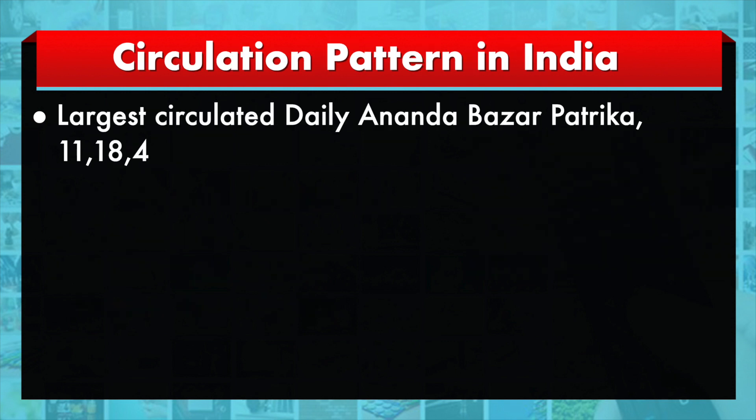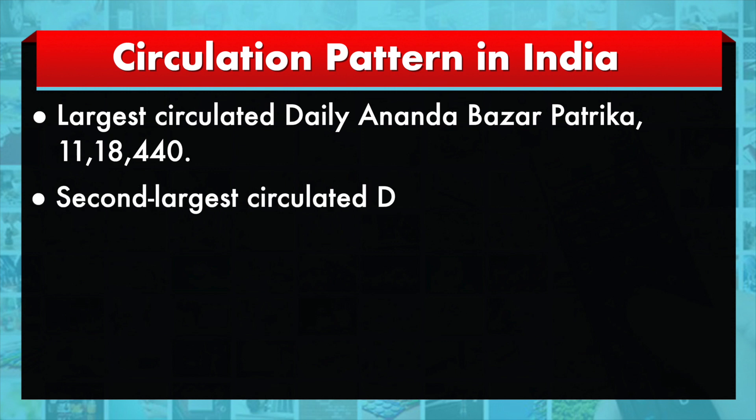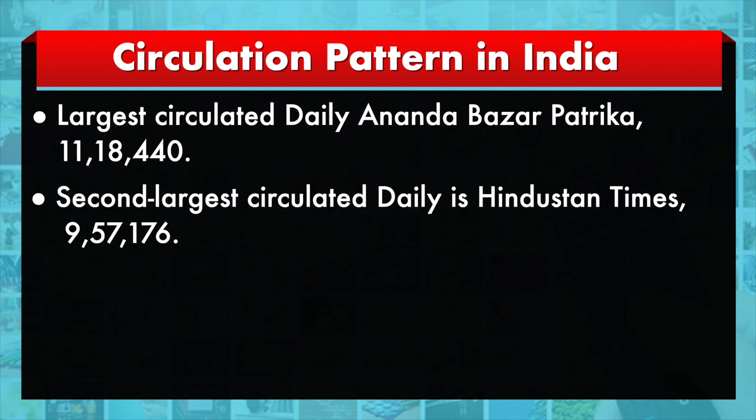The largest circulated daily is Ananda Bazar Patrika, which is also one of the oldest newspapers in India, having a circulation of about 11,18,440. The second largest circulated daily is the Hindustan Times, with 9,50,000 papers being distributed every day.